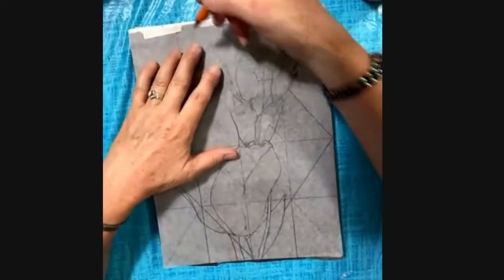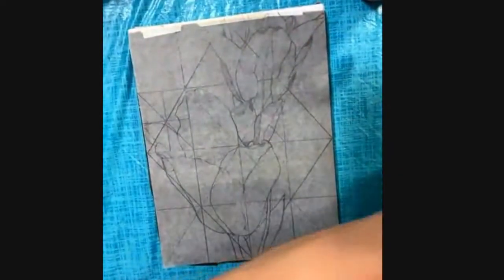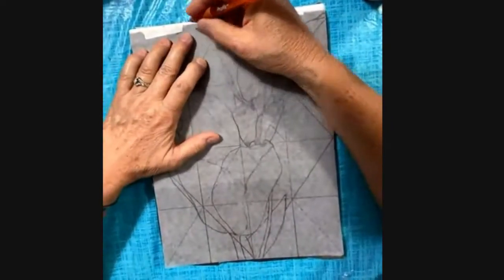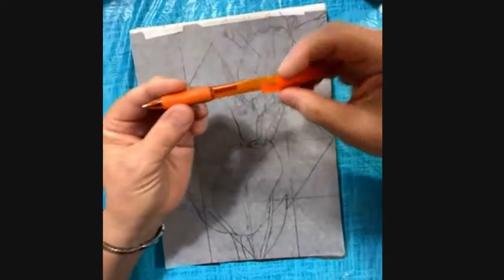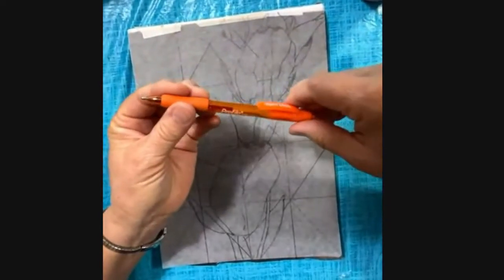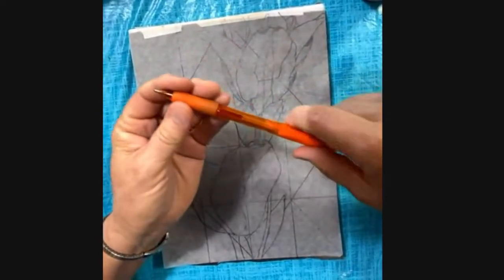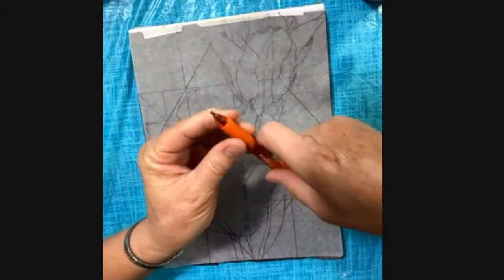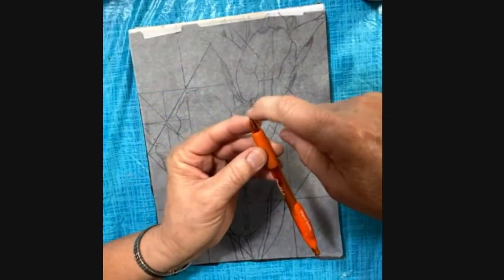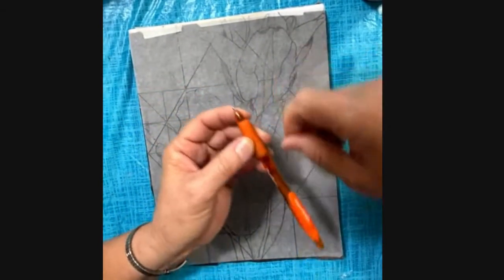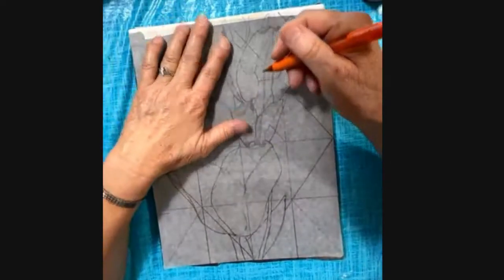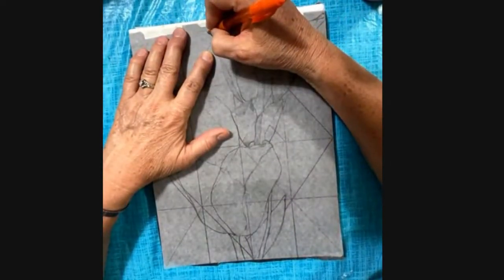So it doesn't really matter where you start. I'm going to start up here. And I like, just a side note, I like these gel pens. It's really nice for transferring, partly because they work well. But I always get the medium tip because if you get the really fine tip on the gel pen it will tear the tracing paper.